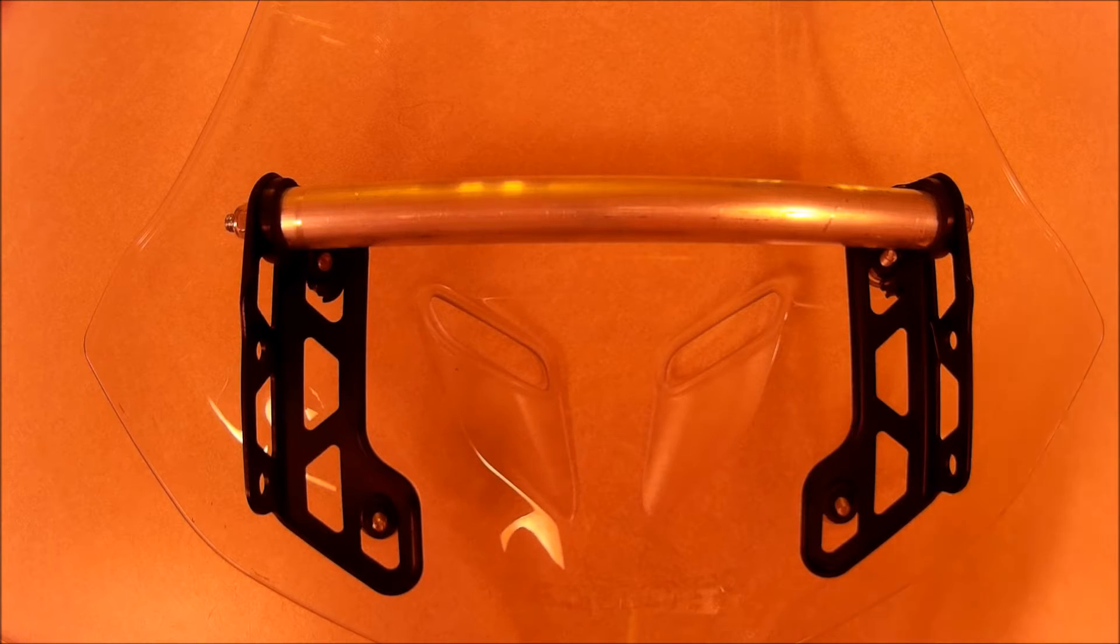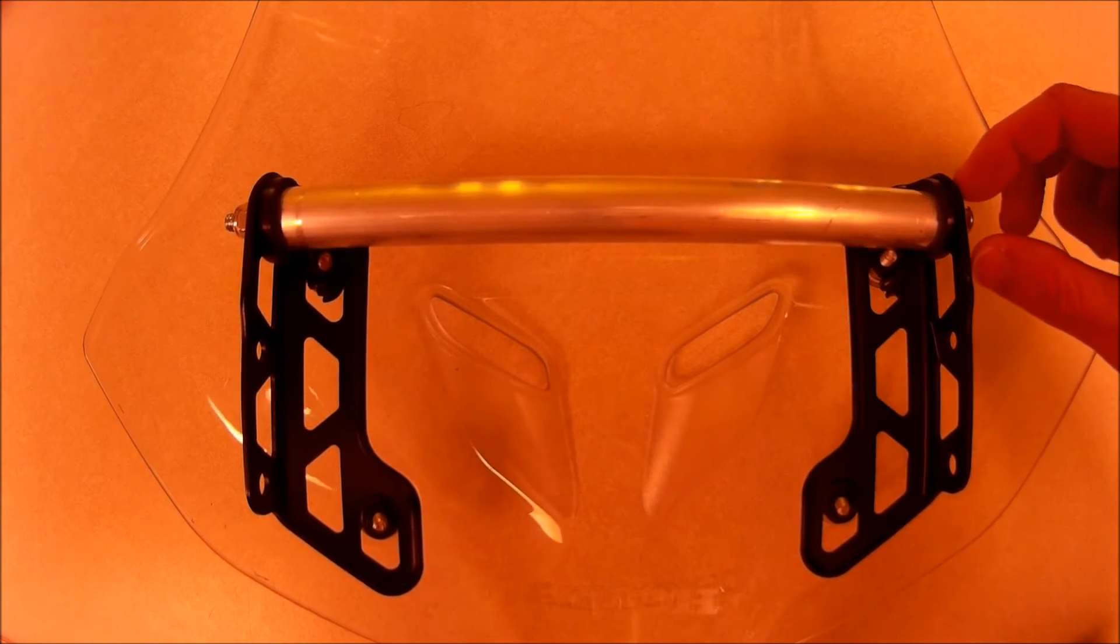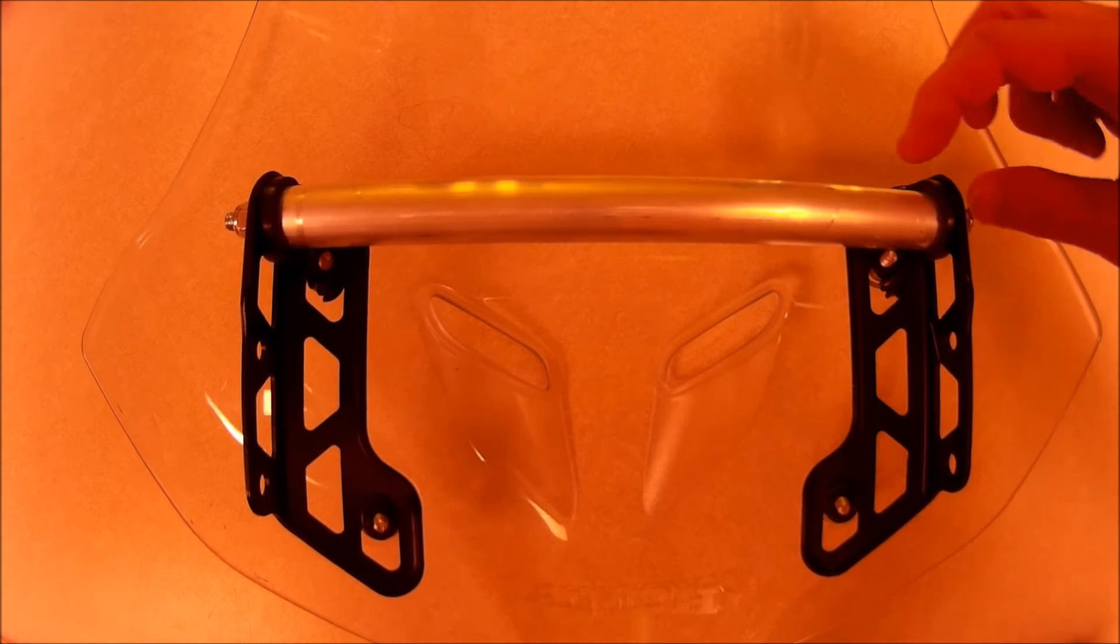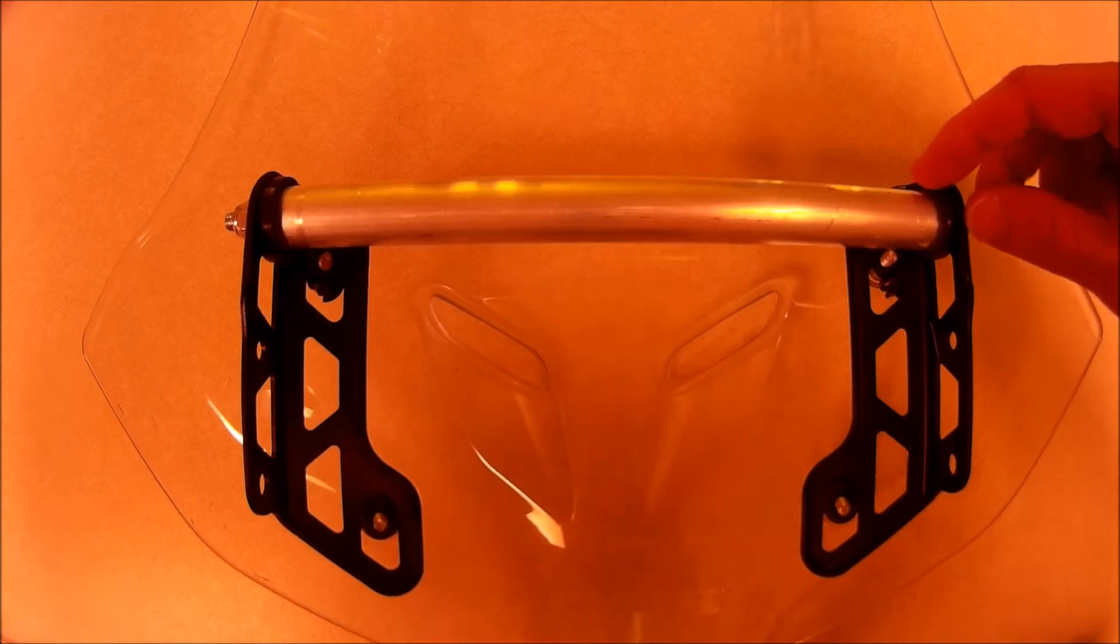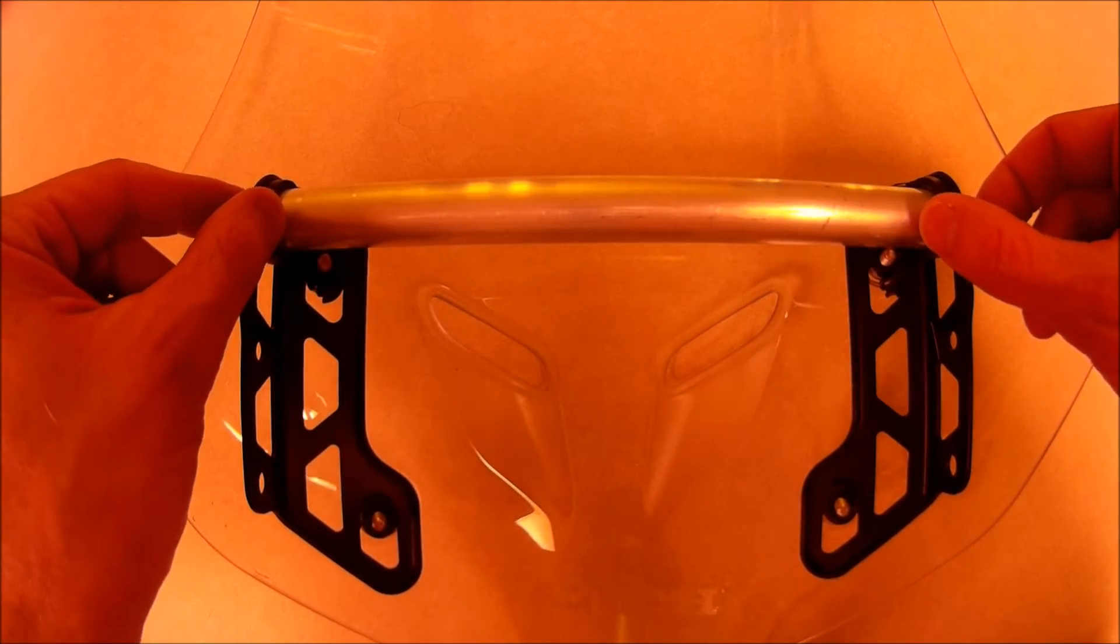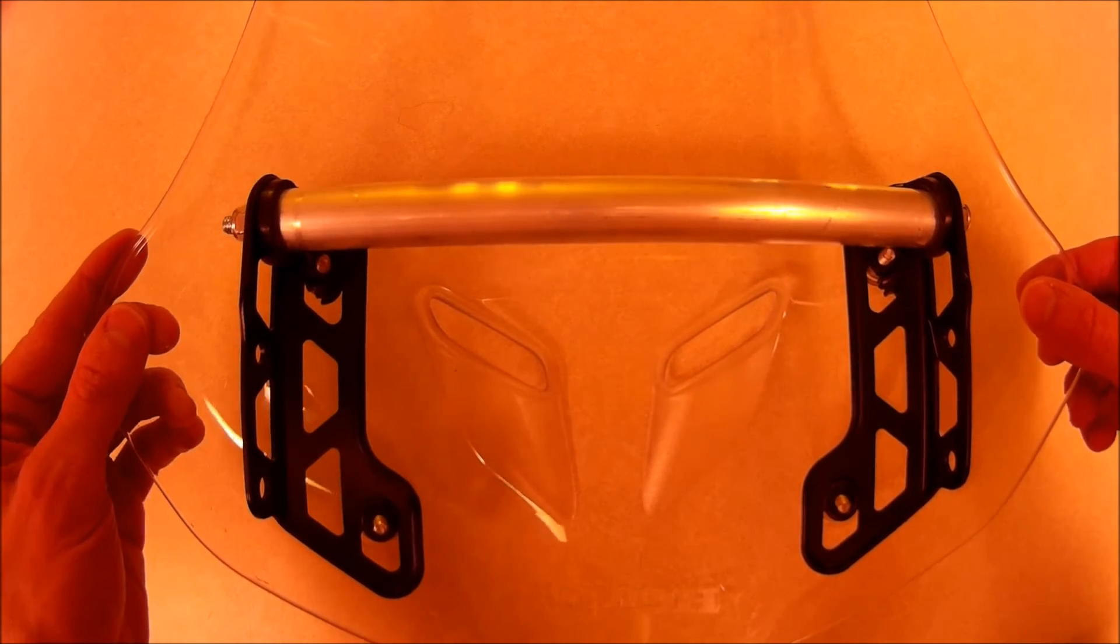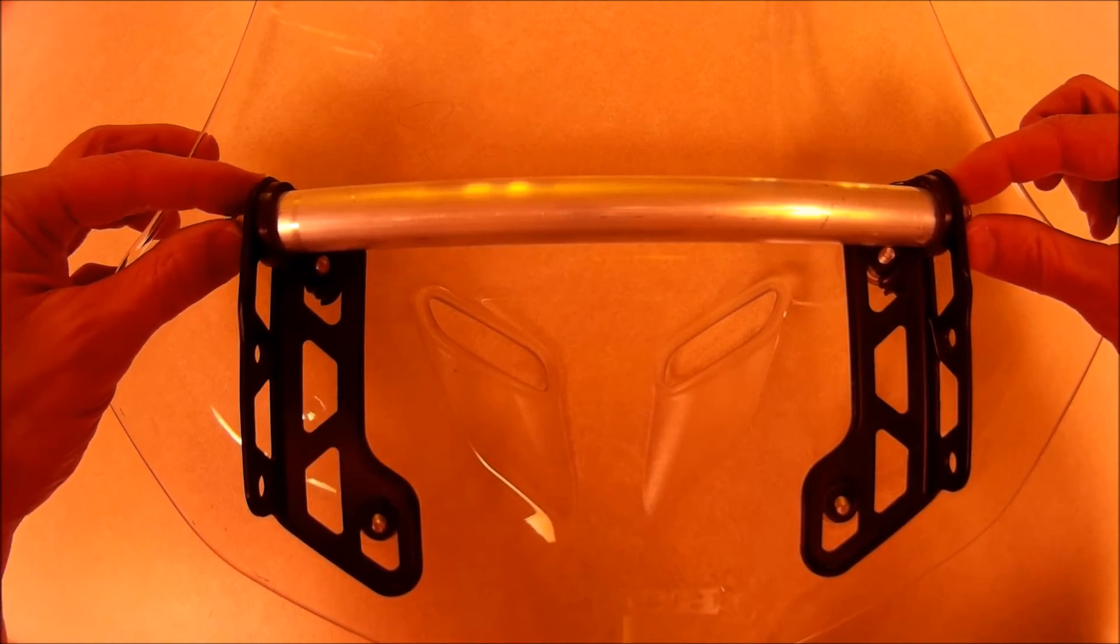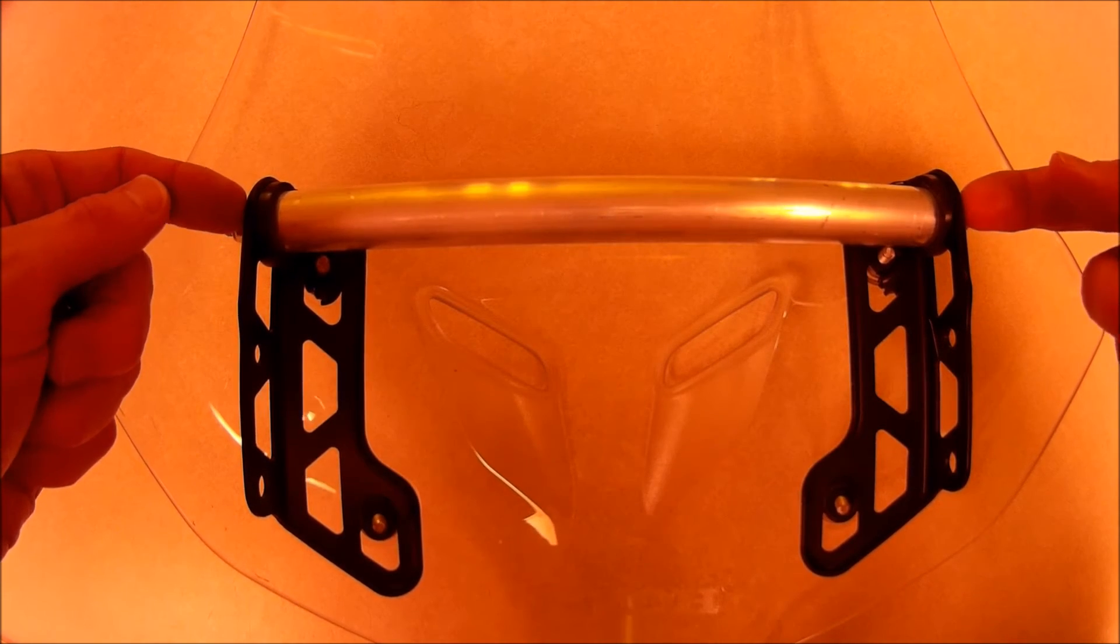So here's the bar mount mounted onto the windscreen brackets. The key to this is to get the length of the bar correct such that when you have this installed you are compressing these rubber bushings about a total of an eighth of an inch or a little bit more. So when you push this thing in here you're going to bow the windscreen outwards and then clamp it back down and set this distance to be the installed distance on the bike.